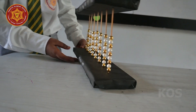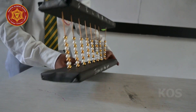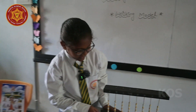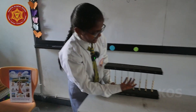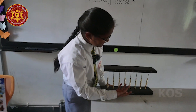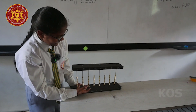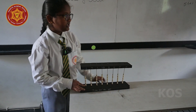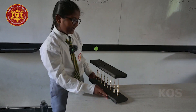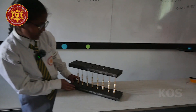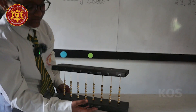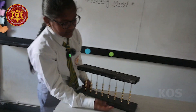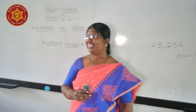In the Indian place value system we have 1, 10, 100, 1,000, 10,000, lakhs, 10 lakhs. In the international place value system we have 1, 10, 100, 1,000, 10,000, 100,000, and millions. Have you enjoyed this activity? Yes!